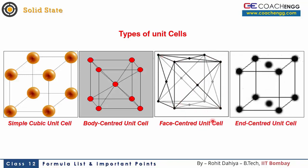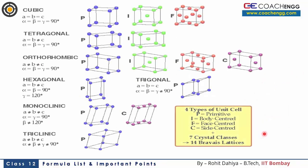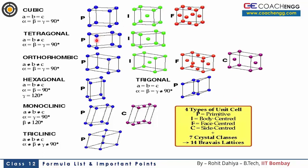The fourth type is the end-centered unit cell. Here the cube has only two parallel faces with atoms at their centers, in addition to atoms at the corners. This type of structure is known as end-centered unit cell. So we have seen crystal systems and 4 different types of unit cells.